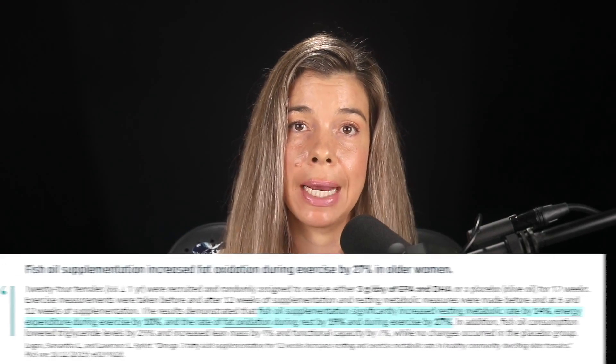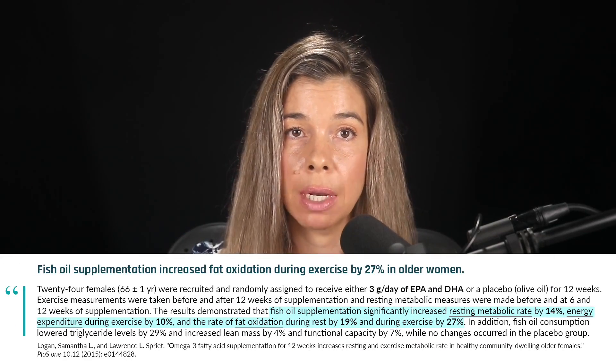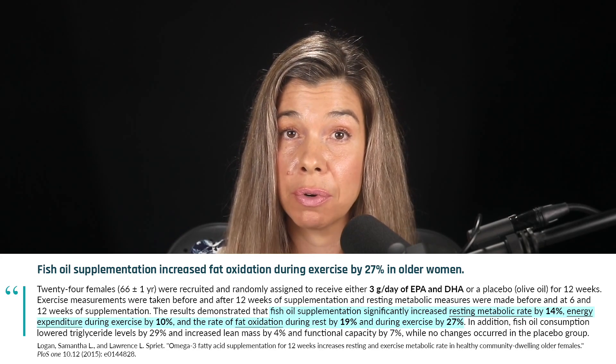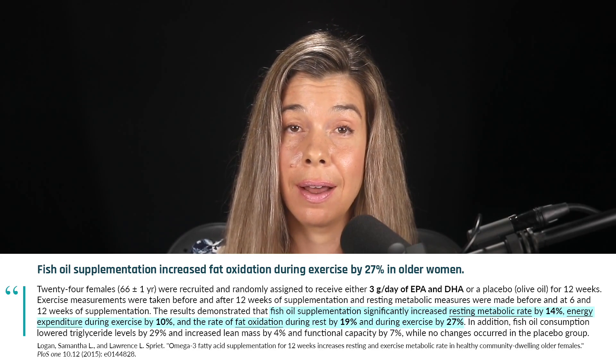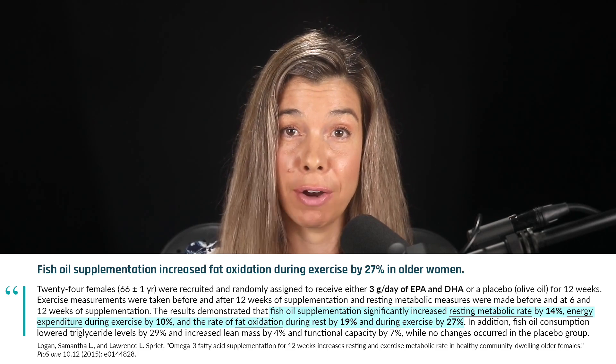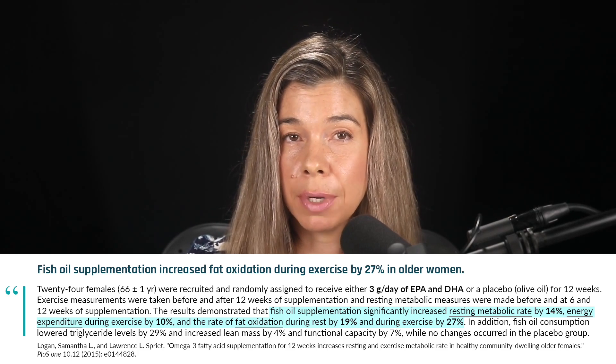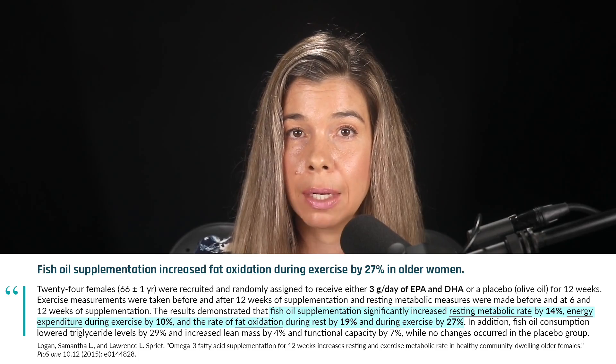There are a few studies — limited evidence — showing that DHA and EPA can increase the metabolic rate both at rest and during exercise in older women. These effects were even more profound for fat oxidation: a 19% increase in resting metabolic rate and a 27% increase in fat oxidation during exercise. Do you think this could be attributed to a mitochondrial-related mechanism?